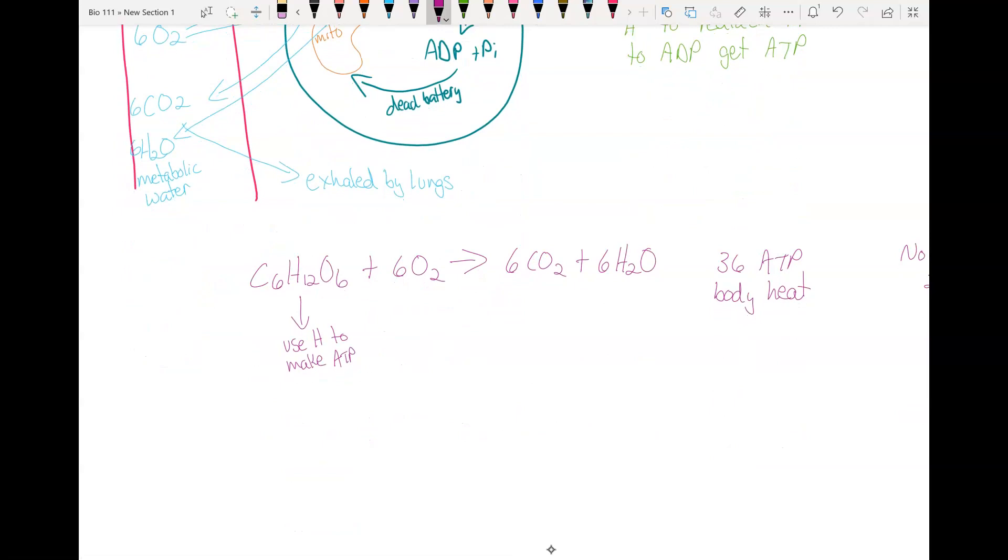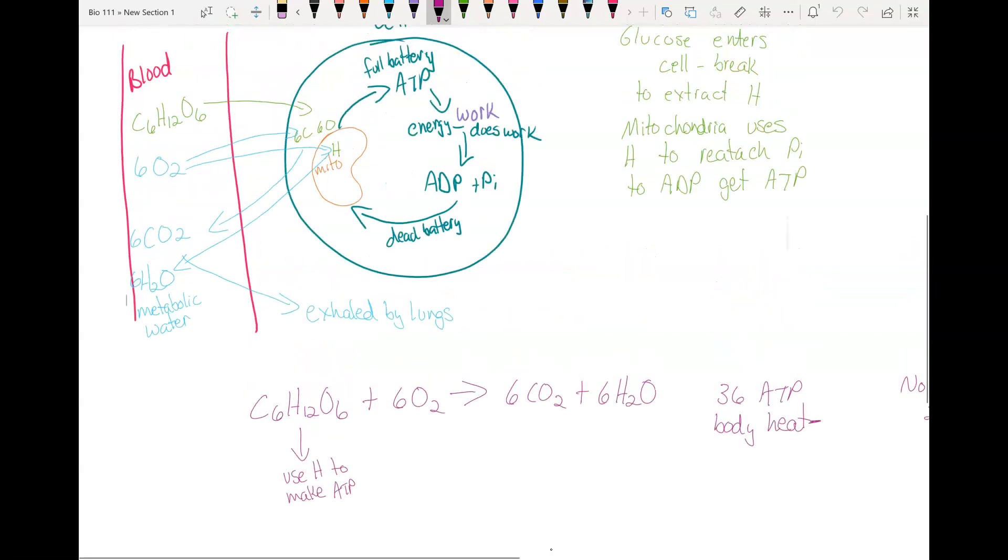Another thing to think about: the body heat. This is why you get hot when you exercise. When you exercise, you're using more ATP. So you have to do this process called cellular respiration more, which means you make more heat. If you're exercising, you're doing this more. You're making more heat.